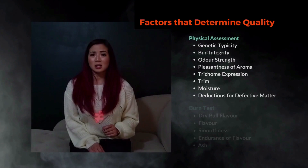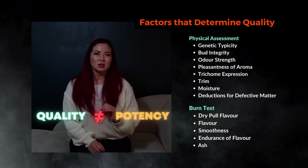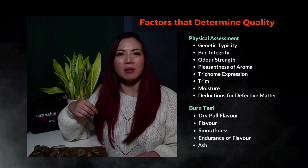Since legalization, the industry has trained consumers to believe that high potency equals high quality. But that's not necessarily the case. There are other factors that lead to cannabis quality, and that starts off with having good genetics. When you have good genetics to start with and it was grown properly, you obtain typicity.